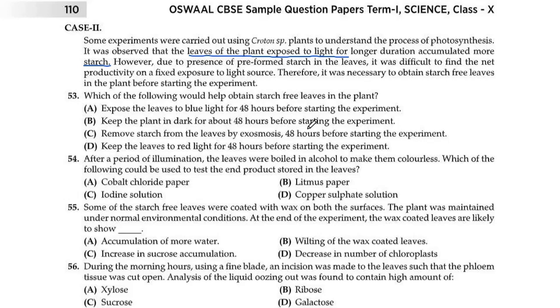Question 53: Which of the following would help obtain starch-free leaves in the plant? Options are: expose the leaves to blue light for 48 hours before starting the experiment, or keep the plant in dark for 48 hours before starting the experiment. This one is correct, exactly correct. If you keep your plant in dark for 48 hours, it won't be able to make starch. There will be no starch, and then when we put it in light again, starch will start forming again and all will be consumed. So yes, B is the correct one. Option C says remove starch from the leaves by osmosis 48 hours before starting, this can't be done. Last is keep the leaves to red light for 48 hours, this is not correct. A and D won't have any effect because light is being provided, blue or red, and they can create starch from it.